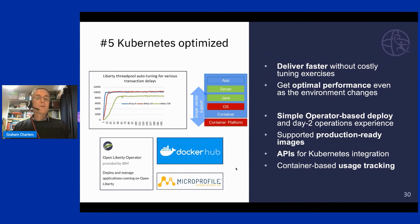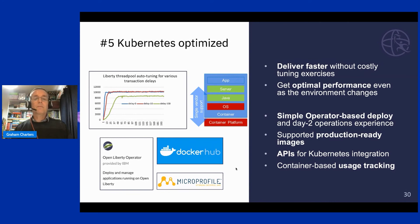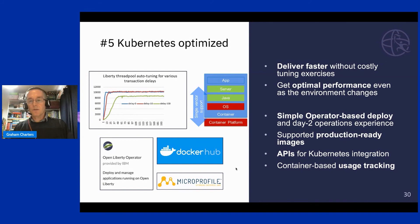We provide an operator called the OpenLiberty operator, which also works and is supported with WebSphere Liberty, giving you a simple experience for deploying Liberty applications into a Kubernetes environment and supporting day-two operations like capturing traces and dumps. We release all our images to Docker Hub for easy consumption, and open source the Dockerfiles so you can create custom images that are still supported. We also provide APIs to help integrate with Kubernetes — for example, MicroProfile APIs to integrate with Kubernetes health probes such as liveness and readiness.